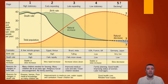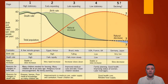In stage three, largely because of improvements in health care, child mortality rates decrease. This fact, combined with an increasing urbanization of the population and improving economic opportunities for women, results in families having fewer children. The birth rate now begins to fall, and population growth slows.